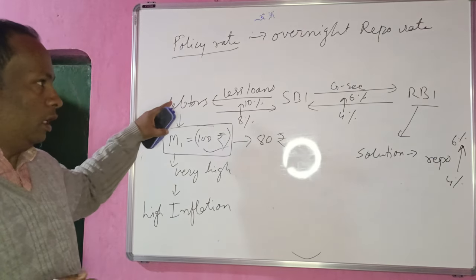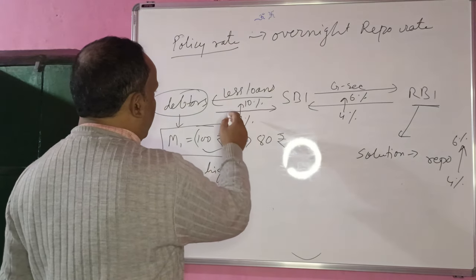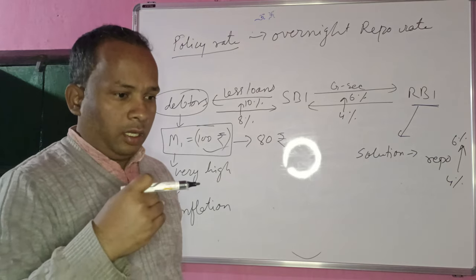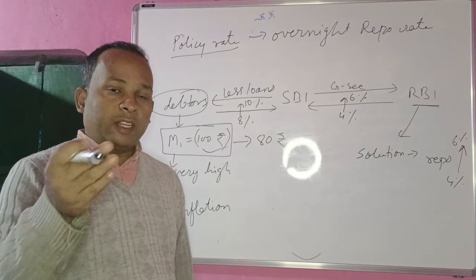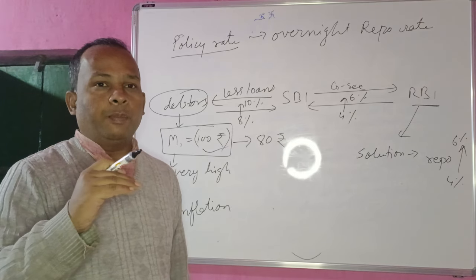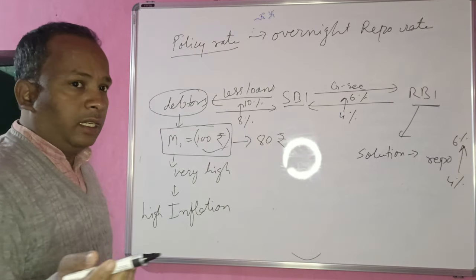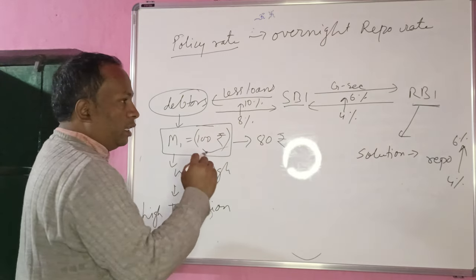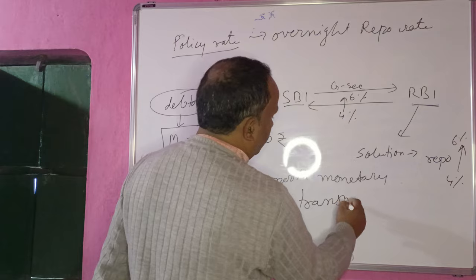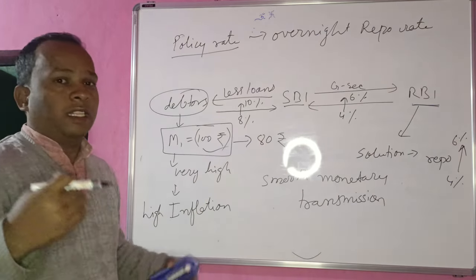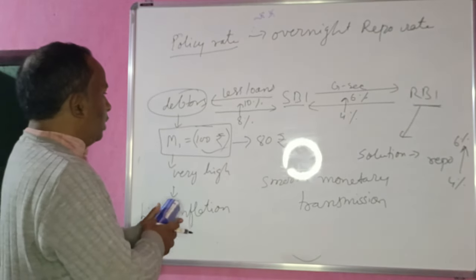If the decision taken by RBI to increase the repo rate gets smoothly transferred to debtors — meaning RBI takes a decision, SBI increases its lending rate as a result — then this is called smooth monetary transmission. It means RBI's decisions are being transmitted to the economy through banks without any interruptions.